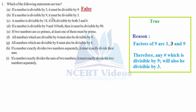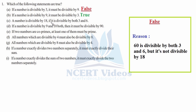Statement B: if a number is divisible by nine, it must be divisible by three. This is true. The reason being the factors of nine are one, three, and nine, and three falls among the factors. Therefore any number which is divisible by nine will also be divisible by three, so B is true.